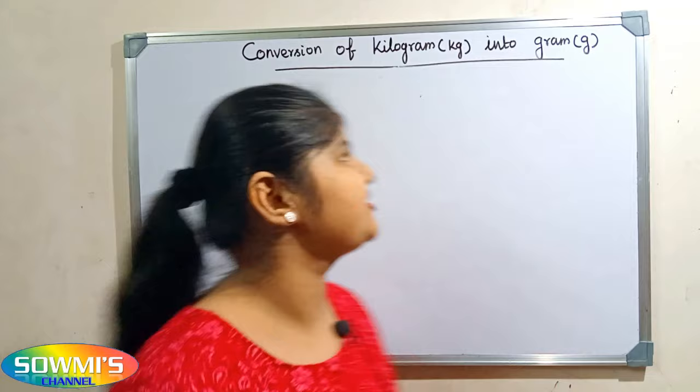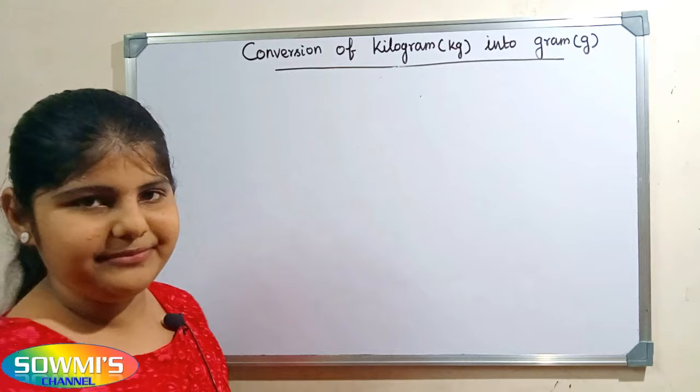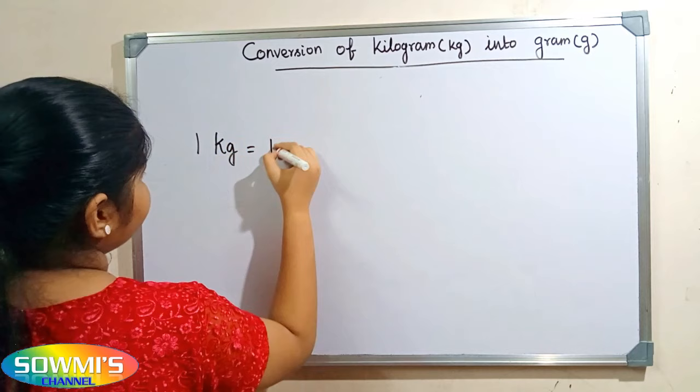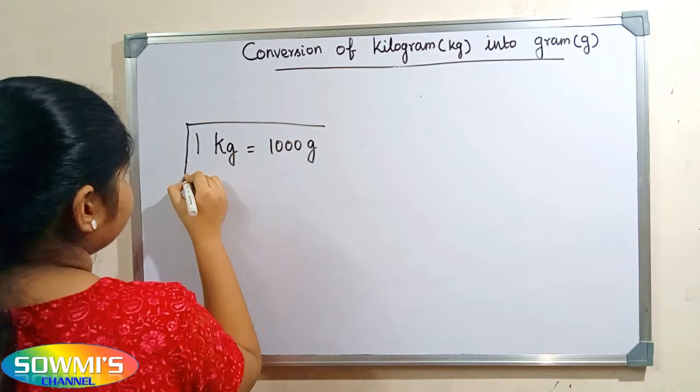Hi friends, welcome to Somos channel. In this video I am going to teach how to convert kilogram into gram. The formula for converting kilogram into gram is: one kilogram is equal to one thousand grams.